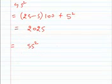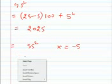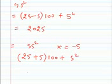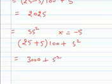If I have to do the 55 square, then I have to just write x is equal to minus y, and then I can do 25 plus 5 into 100 plus 5 square. So that will be equal to 3000 plus 5 square is equal to 3025.